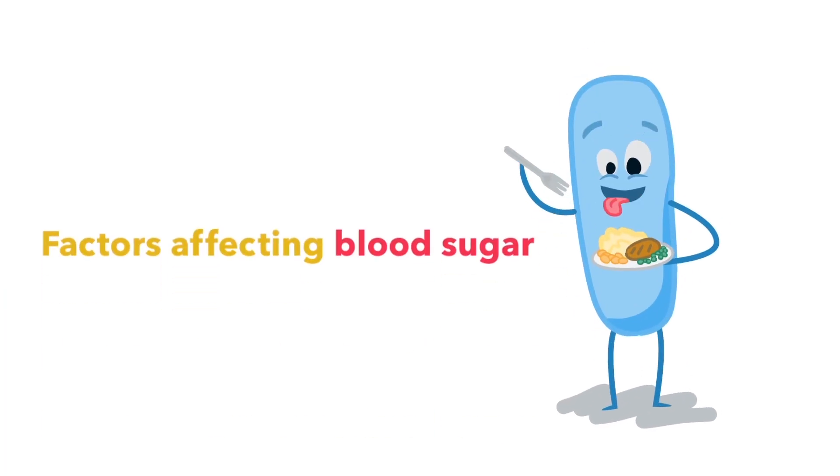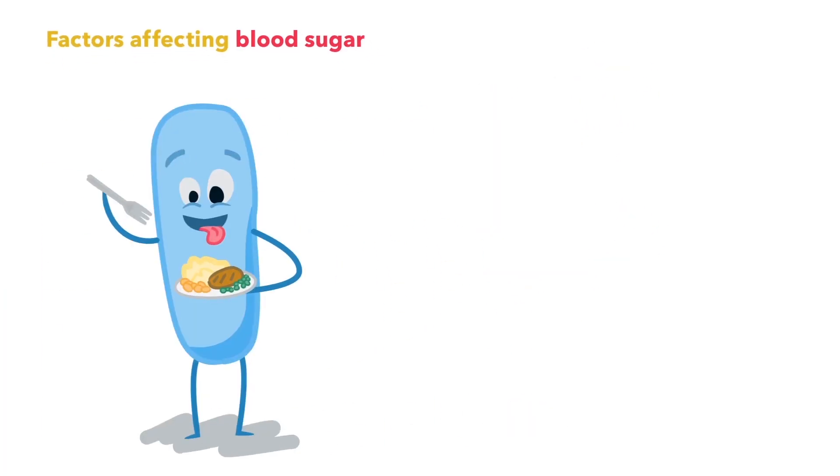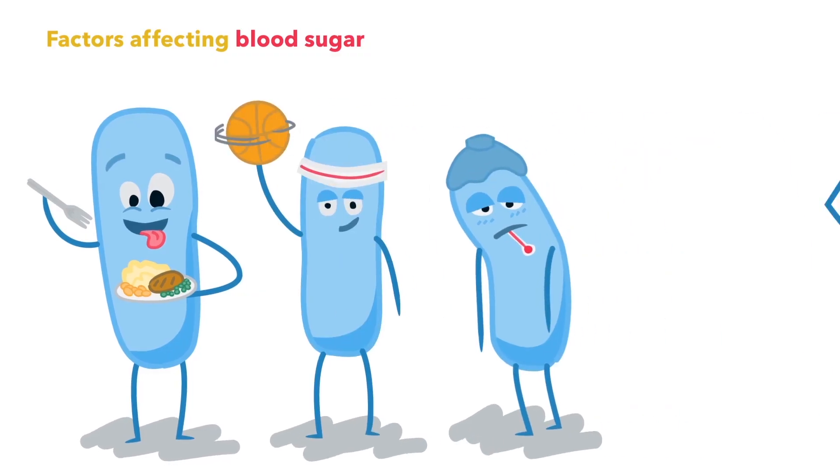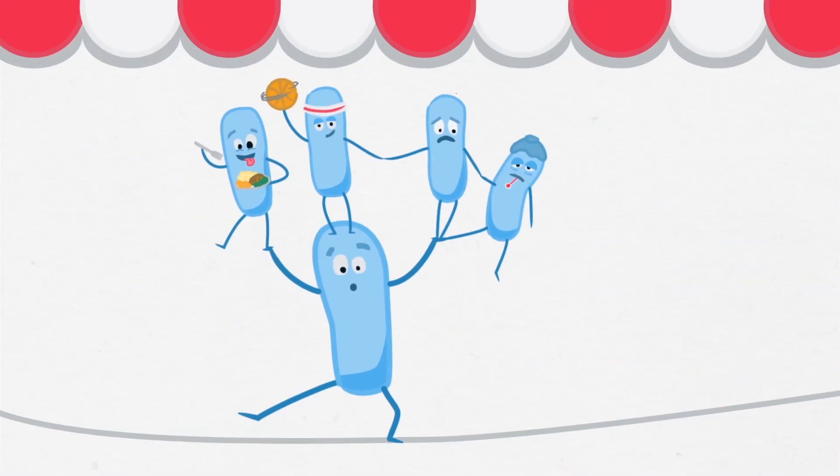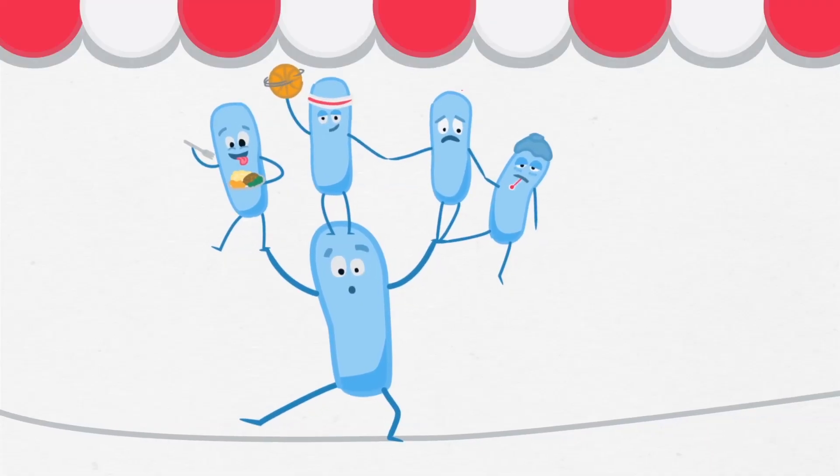Carbohydrates in food are one of the many things that affect blood sugar. Other factors include activity, illness and stress. Living with type 1 diabetes is a constant balancing act.